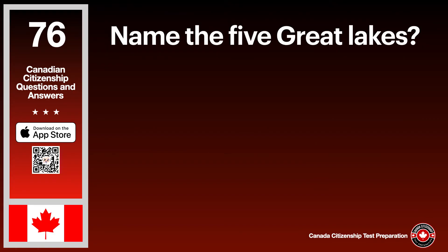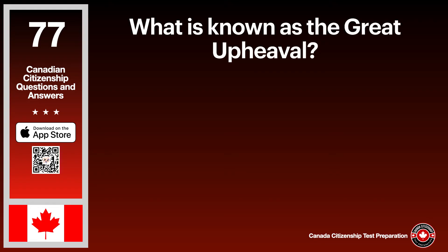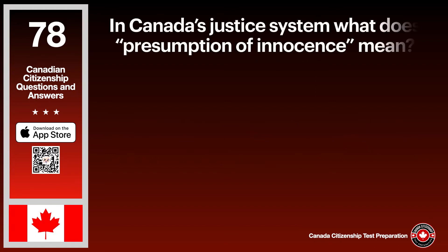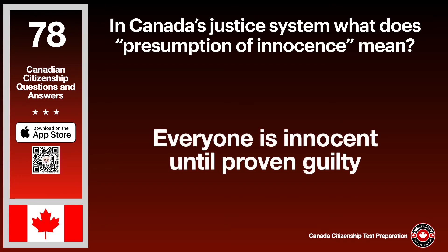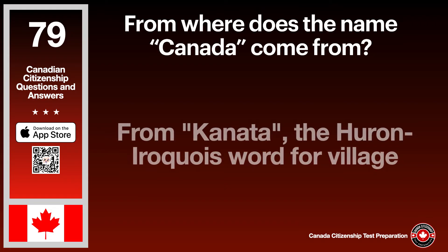Name the five Great Lakes. The answer is Erie, Huron, Michigan, Ontario, and Superior. What is known as the Great Upheaval? The answer is when Acadians were deported during the war between Britain and France. In Canada's justice system, what does presumption of innocence mean? The answer is everyone is innocent until proven guilty. From where does the name Canada come? The answer is from 'Kanata,' the Huron-Iroquois word for village.